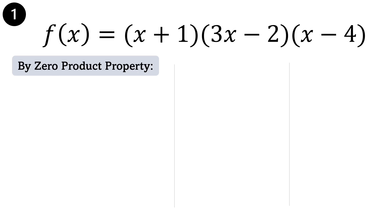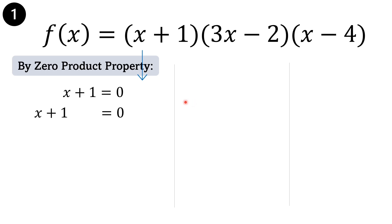Example number 1: f of x equals the quantity of x plus 1 times the quantity of 3x minus 2 times the quantity of x minus 4. Applying the zero product property, we have x plus 1 is equal to 0. By additive inverse, to isolate x on one side,